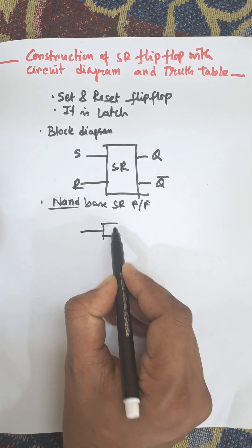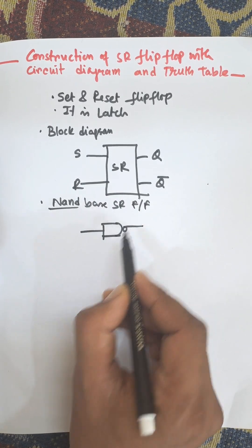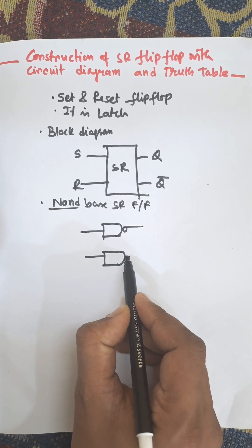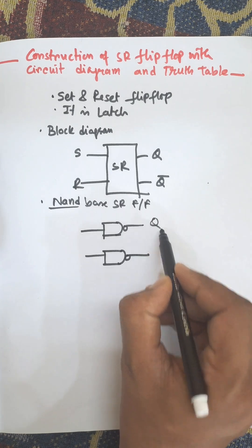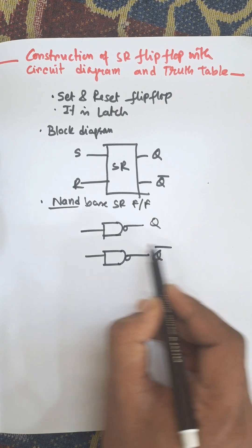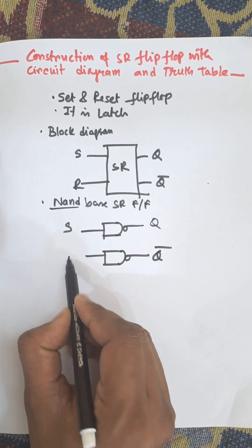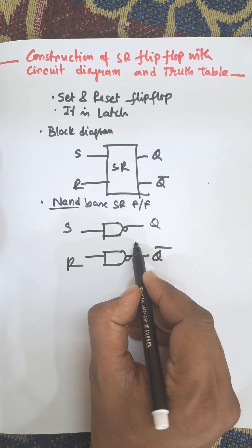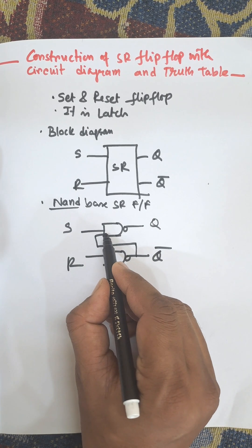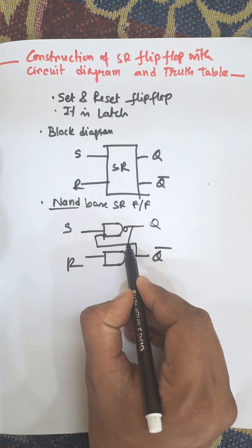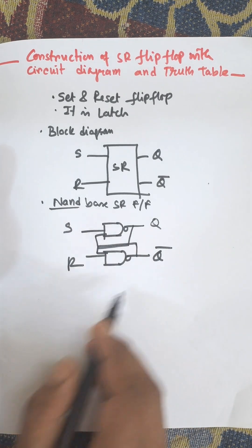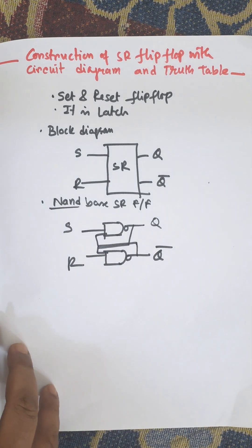This is one NAND gate, this is another NAND gate. This is Q and this is Q-bar. These are S and R inputs. Q-bar is fed back to S and Q is fed back to R. So this is the SR flip-flop circuit.